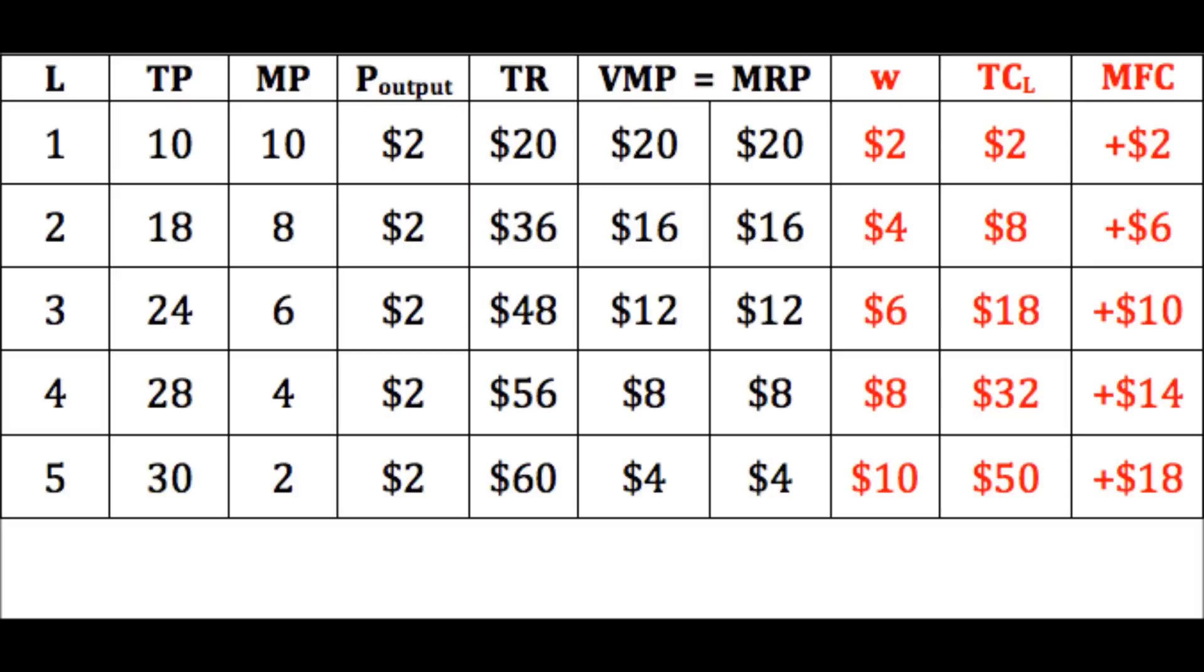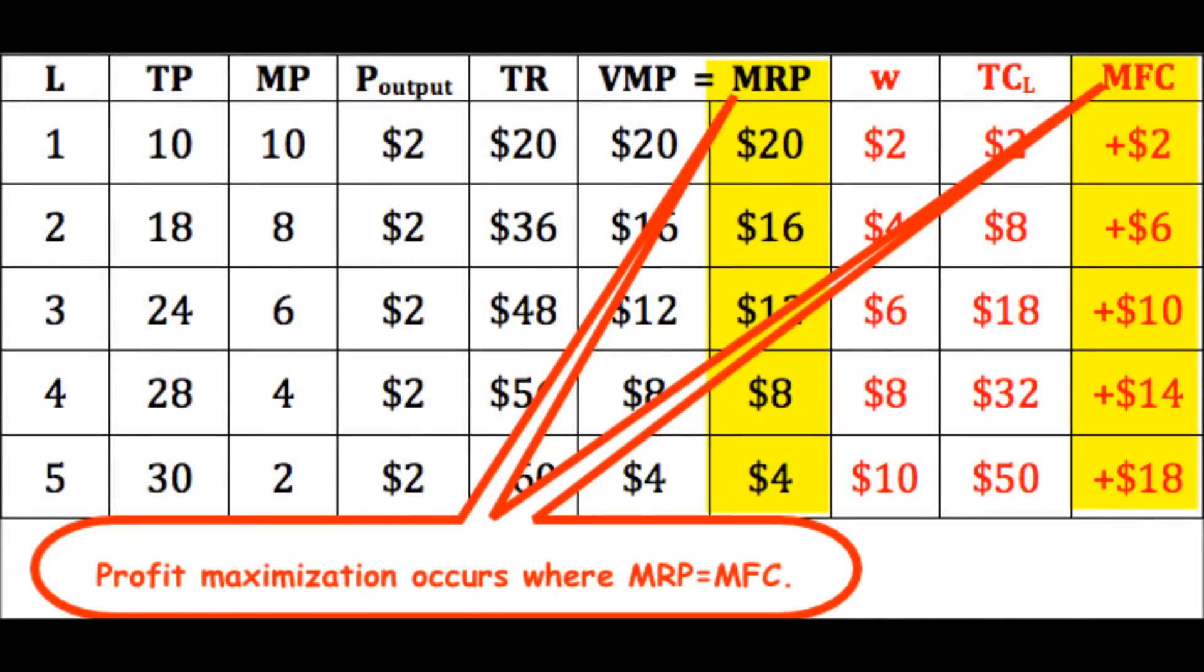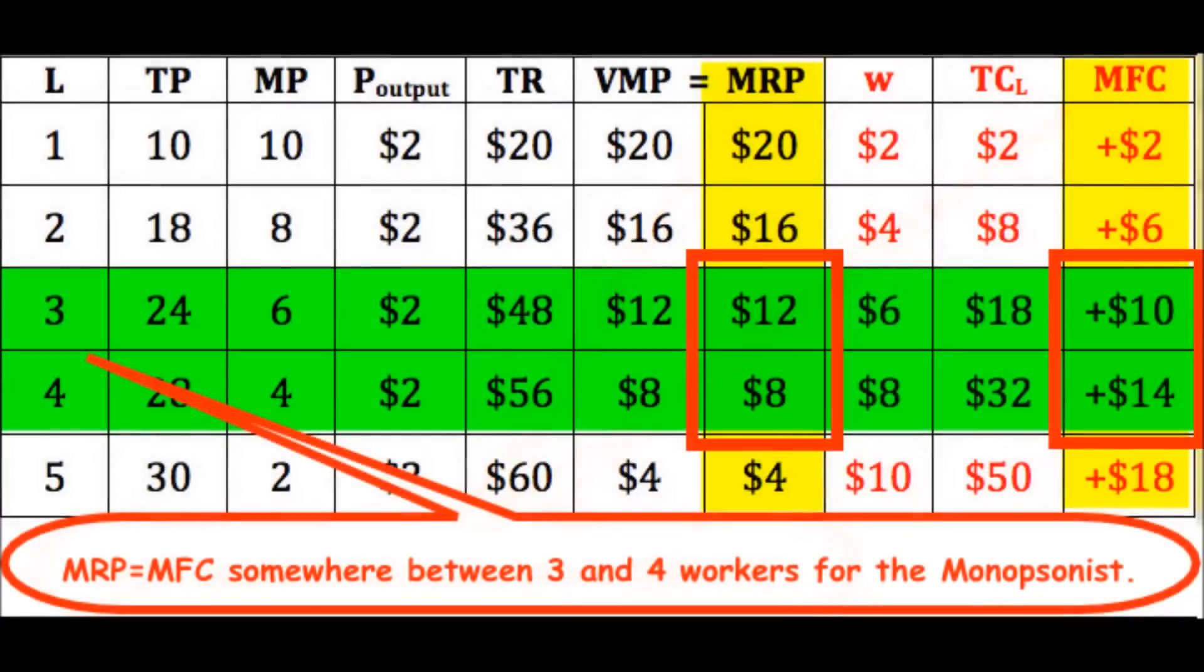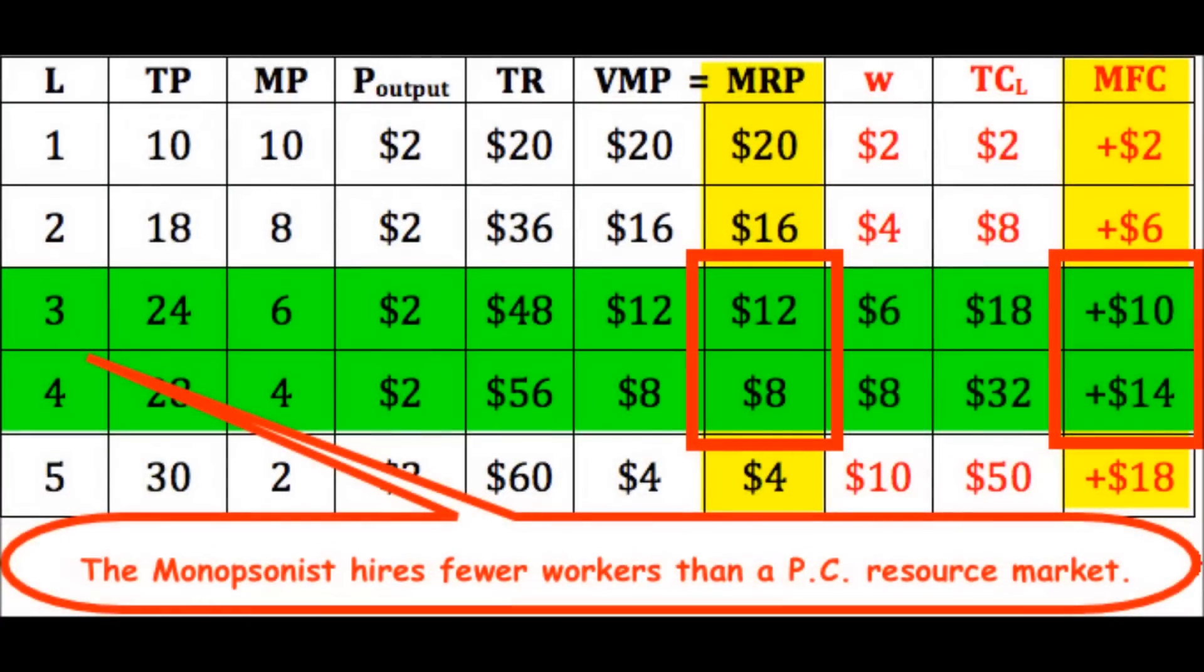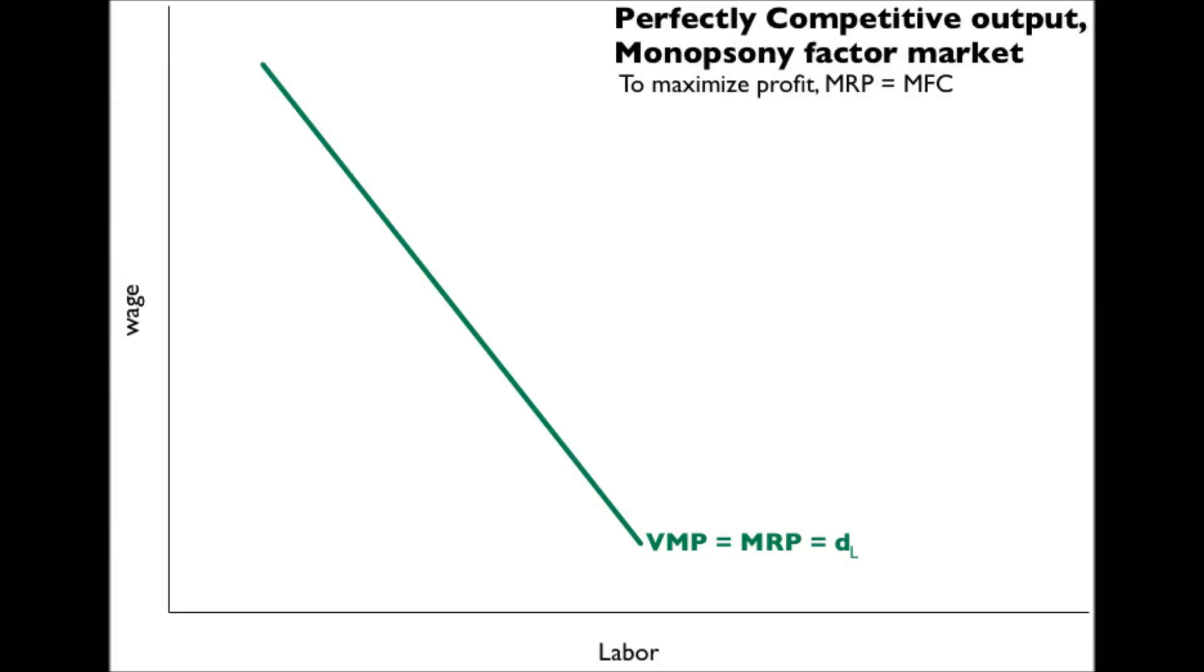Ultimately, the profit-maximizing hiring decision for the monopolist occurs where marginal revenue product equals marginal factor cost, somewhere between three and four workers. To recap, because of the perfectly competitive output market, value of the marginal product and marginal revenue product are the same.